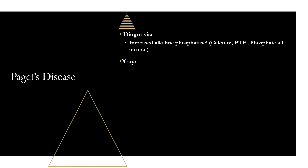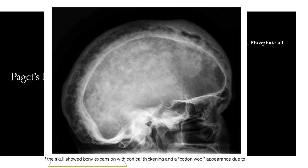On x-ray, you may see increased trabecular markings during the sclerotic phase, and a cotton wool appearance on skull radiographs due to thickened and sclerotic patches of bone around the skull, which can be quite dramatic in Paget's disease patients.